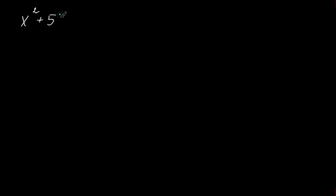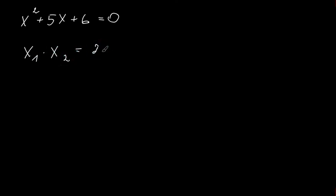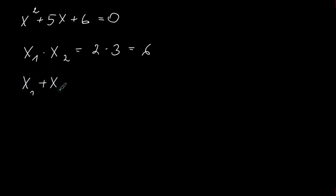Let's say we have x² plus 5x plus 6 equals zero. What two numbers could we multiply to get 6? We could multiply 2 and 3. So 2 times 3 gives us 6. What if we add these two numbers? We will get 5.